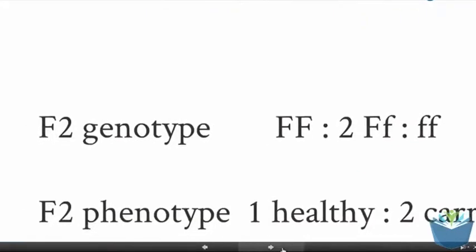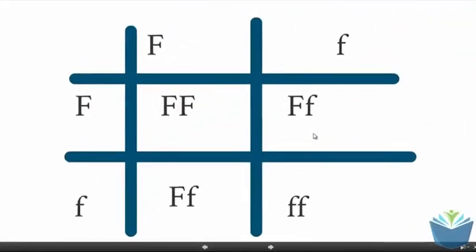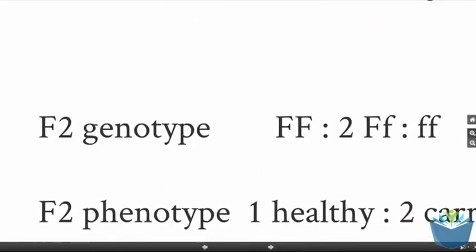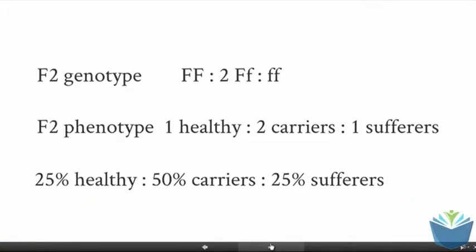That gives us an F2 genotype, and that refers to the second generation, the F1 being the first generation. You can get these possibilities. You can get an individual with a genotype big F, big F. You can get two individuals with big F, small f. I'll just flip back to that. The reason why it's two is because there's two of them there. Then you get one individual that has the condition. The F2 phenotypes in this instance will be one healthy, corresponding to this one here, two carriers, these two here, and one sufferer, this one here.